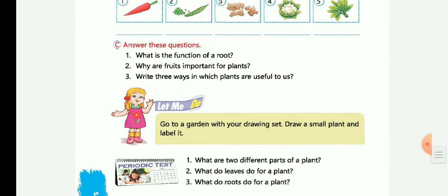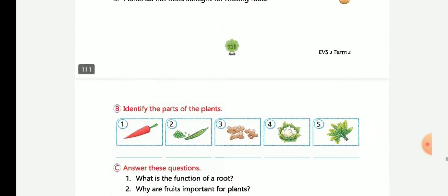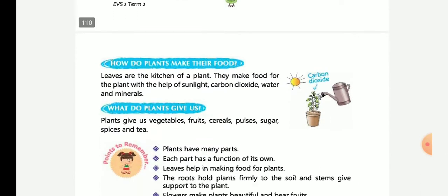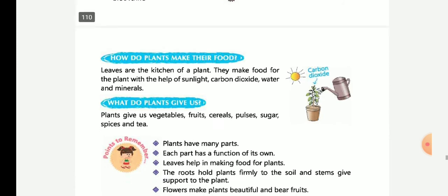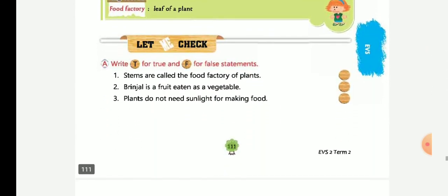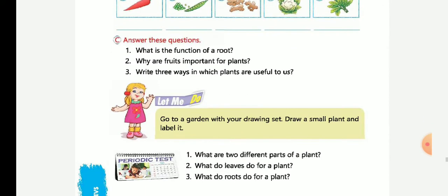Write three ways in which plants are useful to us. Plants give us oxygen, very good. Plants give us fruits, vegetables, cereals, pulses, sugar, spices and tea. We eat vegetables from some plants.